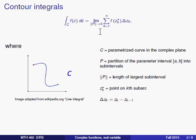We take the limit of a bunch of sums, and the sums are evaluated by taking points along a complex curve and multiplying by a difference in the endpoints, which depends on the partition.